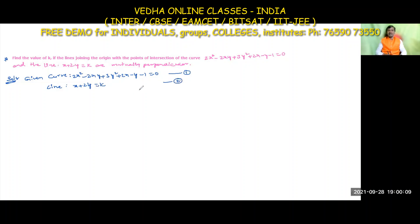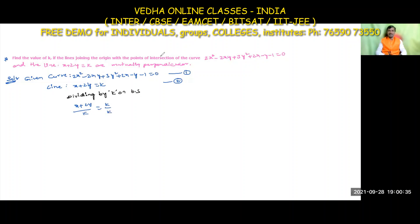Dividing by k on both sides of the line equation: (x + 2y)/k = 1. This is equation 3. We will substitute equation 3 into equation 1.